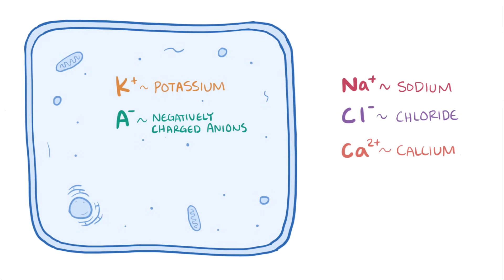Generally speaking, there's higher concentration of Na+ or sodium, Cl- or chloride, and Ca2+ or calcium on the outside of the cell, and a higher concentration of K+ or potassium and A-, which is just what we write for negatively charged anions, on the inside of the cell. These anions include a variety of amino acids and proteins that are produced by the cell.